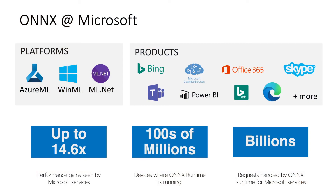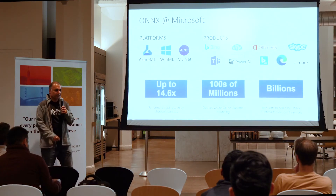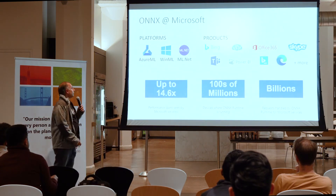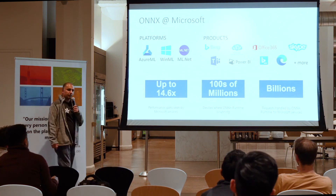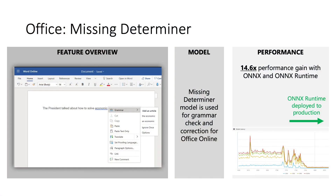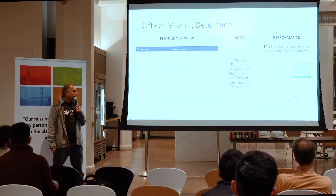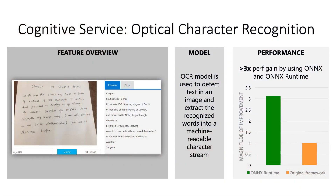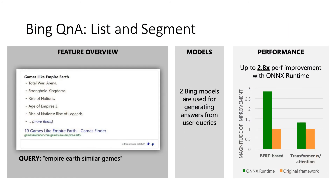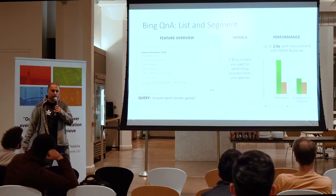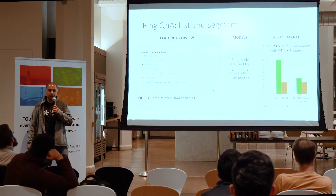Is Onyx Runtime actually being used at Microsoft? Onyx is used a lot internally. In Office, the missing determiner model used for grammar check shows a 14x performance gain compared to what they were using before. The optical character recognition model shows a 3x performance gain, also used as part of cognitive services. And the Bing question and answer models show a 2.8x performance improvement. These are live examples of internal customers using Onyx, Onyx Runtime, and Onyx converted models.